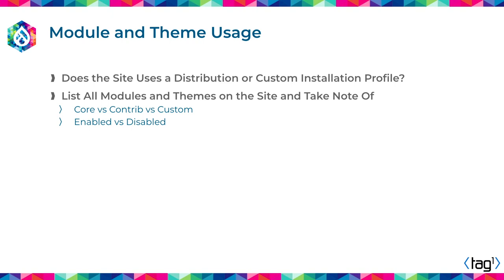Going to another example — we have a project with one of the departments at an Ivy League university, an art department that had a website for collecting poems and images. When they gave us access, we were very surprised: they had literally hundreds of modules and more than two-thirds of them were disabled. After some digging around, we learned that because this website is under the jurisdiction of the university, the IT department set up the initial installation using a custom distribution they use for every website in the university. So even though you only use a third of the modules, you still get the whole package.